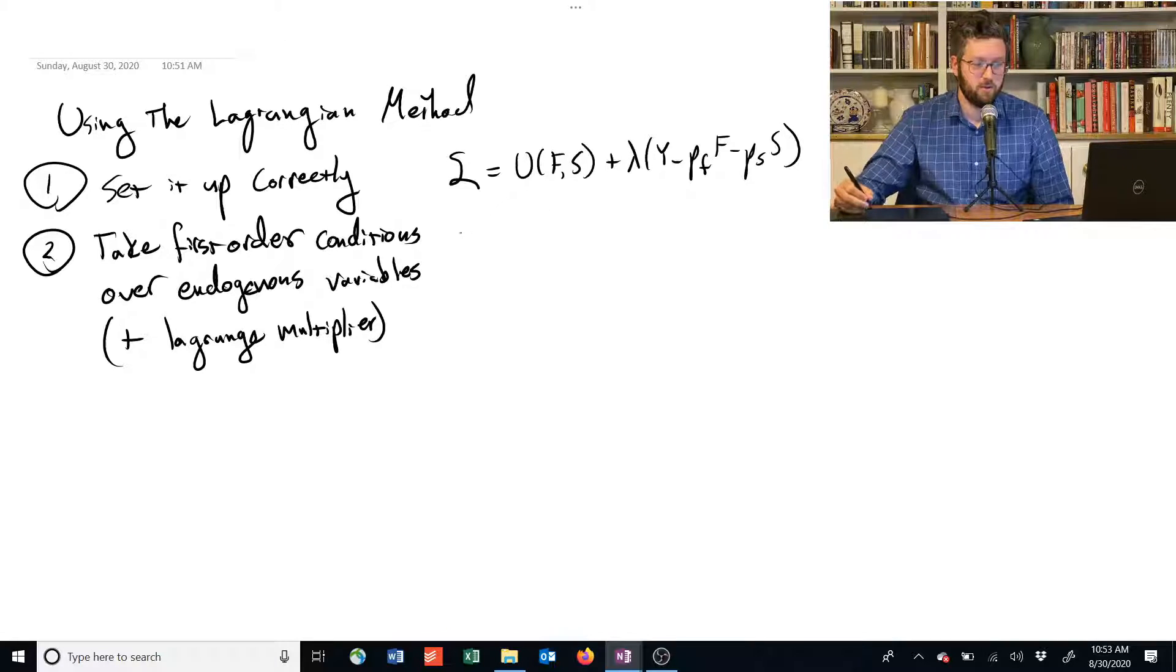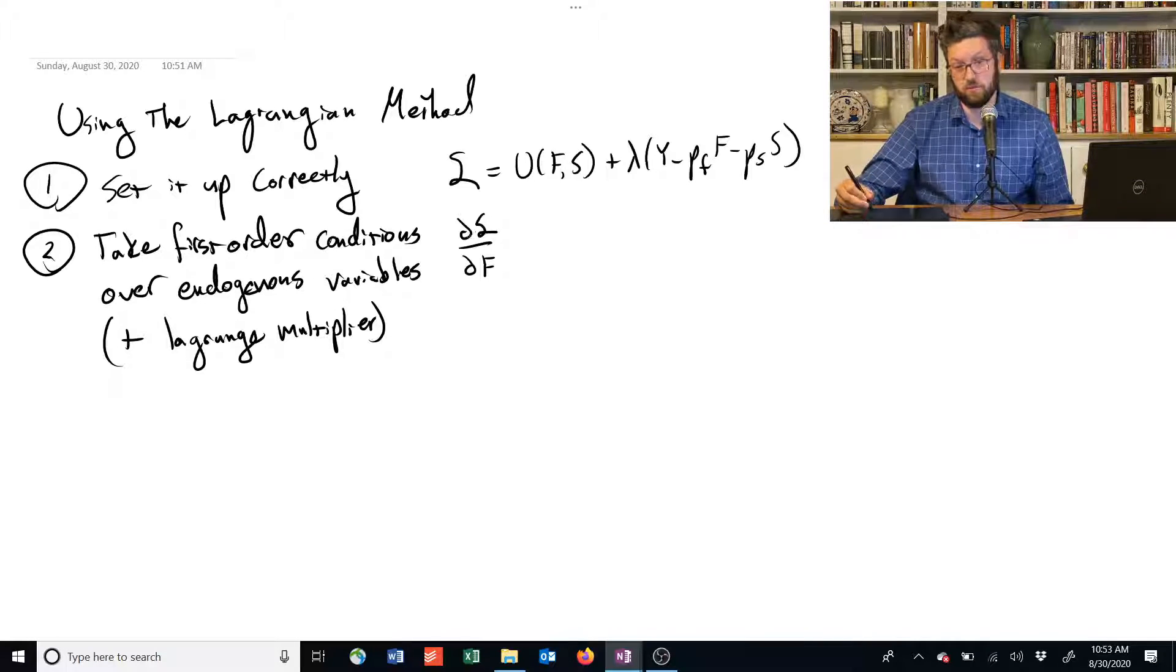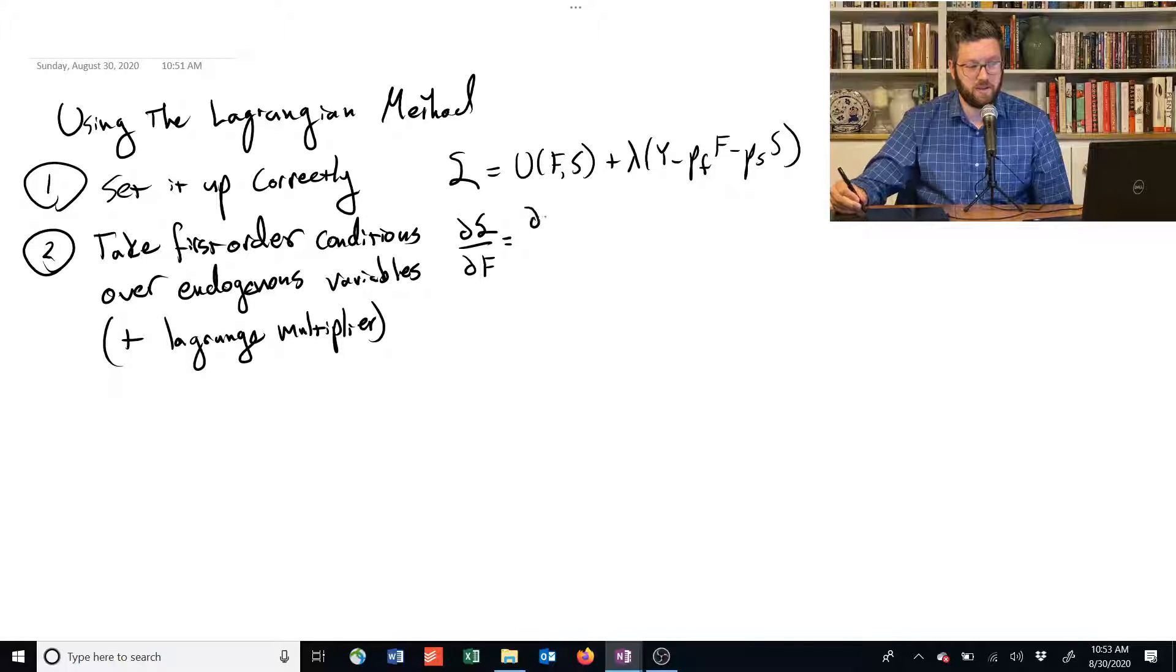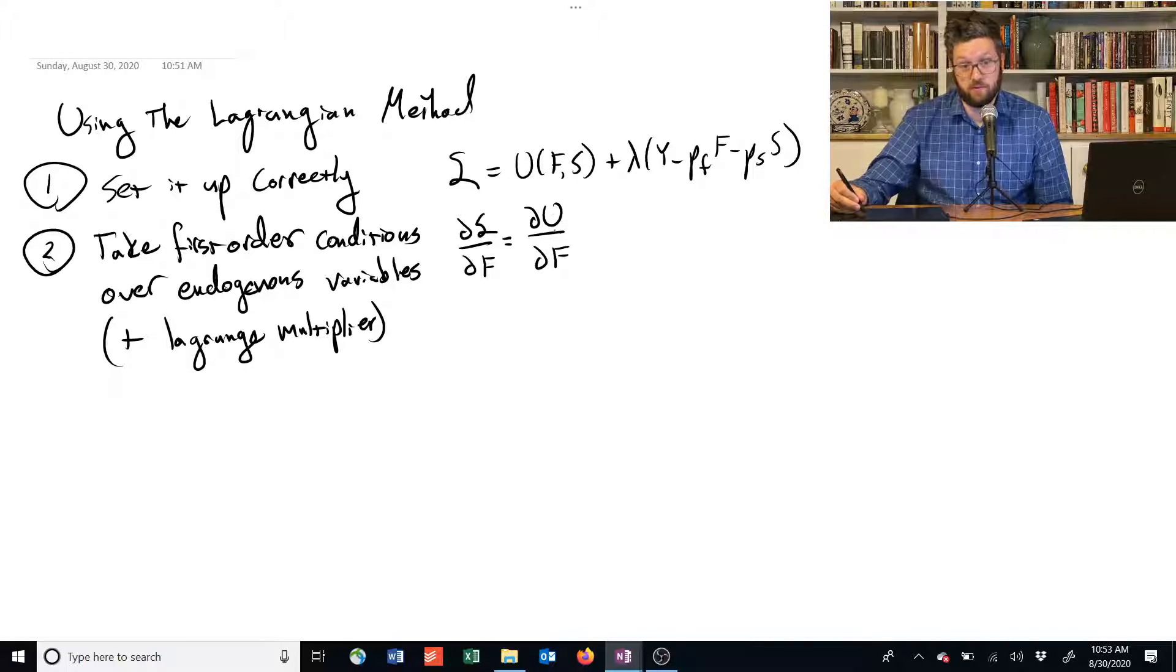So, if we take the first-order conditions, what does that look like? Well, we're going to take the partial derivative of this Lagrangian with respect to food, because the consumer is choosing how much food to consume. And we get that the partial derivative of the utility function with respect to food is the first thing we get.